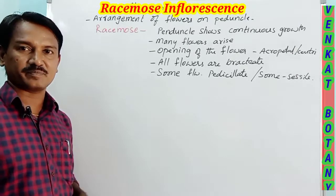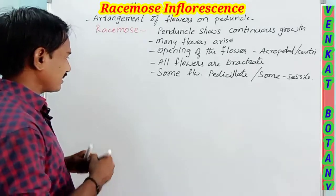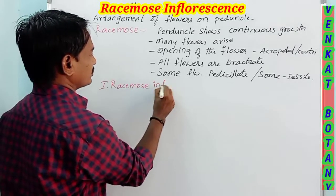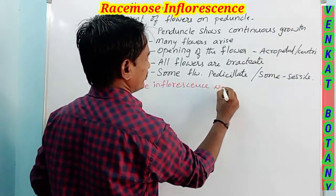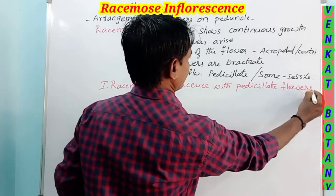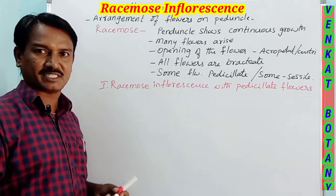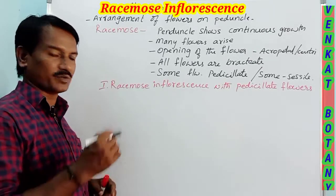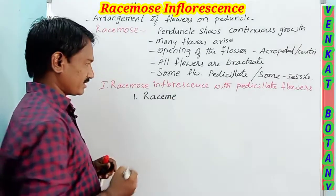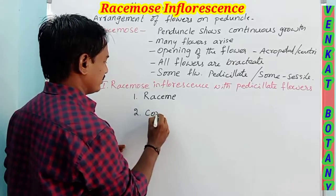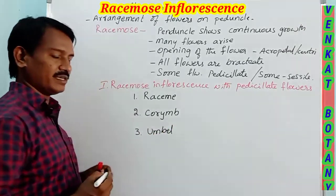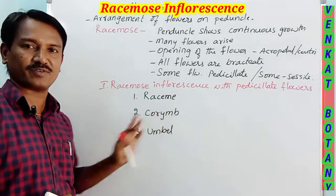Under racemose inflorescence there are different types. Racemose inflorescence with pedicellate flowers has three types: first is raceme, second is corymb, and third is umbel. So three types of racemose inflorescence with pedicellate flowers.